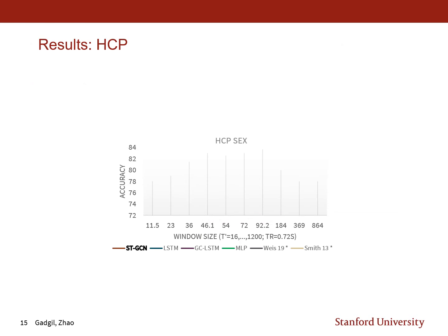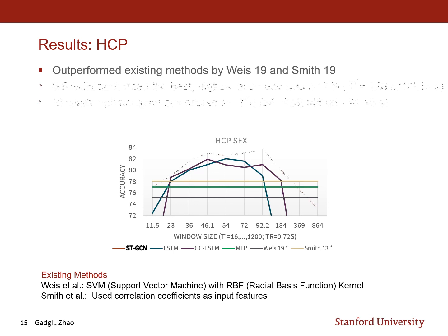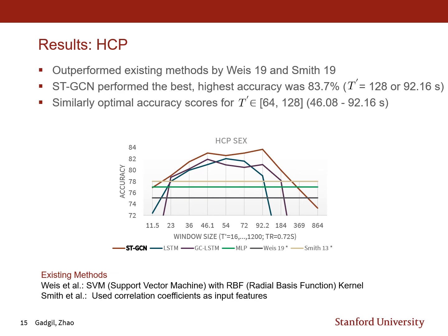Looking at the HCP dataset results: existing methods include Weiss et al. using a support vector machine with RBF kernel, and Smith et al. using correlation coefficients as input features. These are followed by the MLP baseline, the LSTM baseline, the graph convolution plus LSTM baseline, and finally our method STGCN. STGCN performed best with the highest accuracy of 83.7% at an optimal window size T prime of 128. Notably, similar accuracy scores were obtained for a window size range of 64 to 128, which is highly correlated to the window size from the NCANDA dataset, despite distinct imaging protocols, different numbers of ROIs, and different BOLD signal lengths.